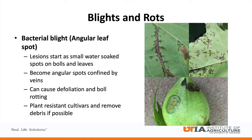Bacterial blight, also known as angular leaf spot, is a bacterial disease that can infect not only the leaves but the bolls as well. Lesions start as small water-soaked spots on bolls and leaves that can become progressively larger. On leaves, the spots are confined to the veins, which gives them the angular spot appearance. In severe cases, this can cause yield losses due to defoliation and boll rot or shedding. Bacterial blight can overwinter on old stalks and debris, so destroying seasonal debris is a good strategy. Also, try to plant resistant cultivars when possible, and you can look up resistant cultivars on the UT Crops website.